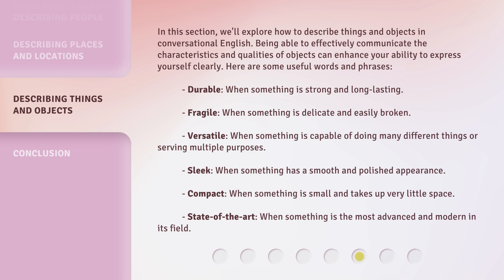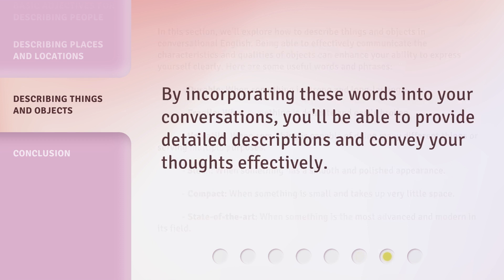Sleek — when something has a smooth and polished appearance. Compact — when something is small and takes up very little space. State of the art — when something is the most advanced and modern in its field. By incorporating these words into your conversations, you'll be able to provide detailed descriptions and convey your thoughts effectively.